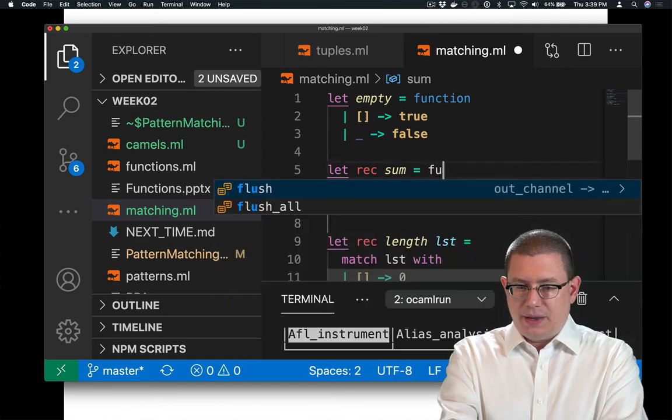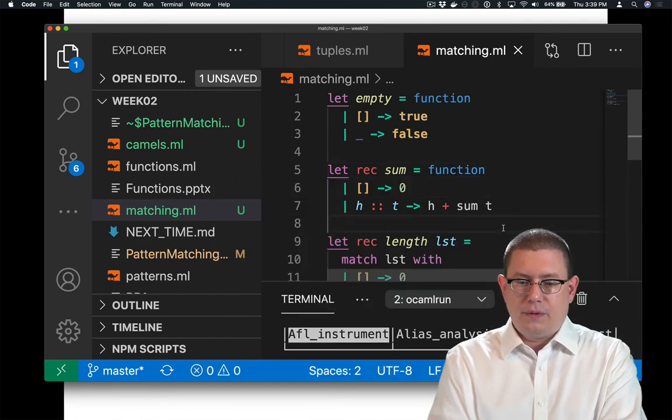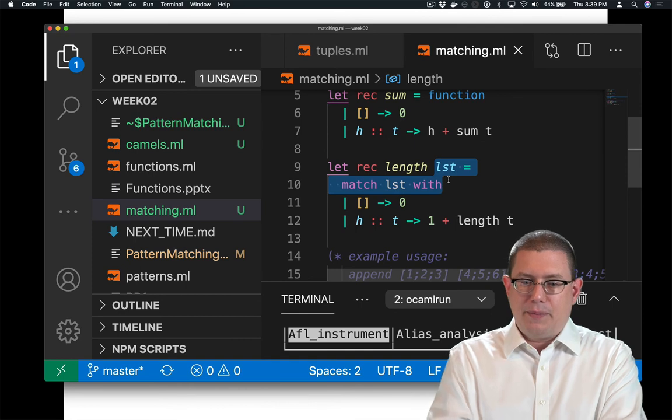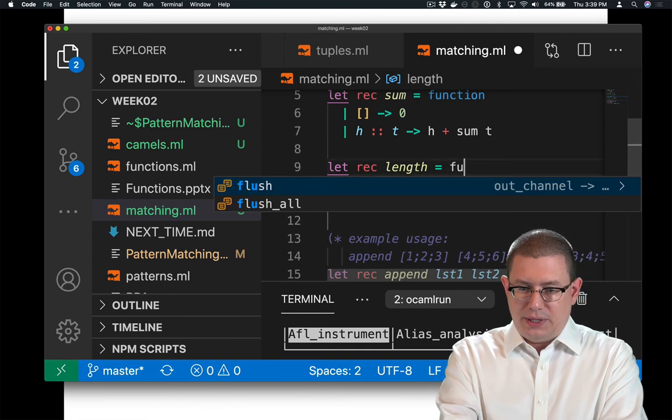For sum, I could do the same thing, equals function. For length, I can do the same thing, because I'm pattern matching against the last argument, equals function.